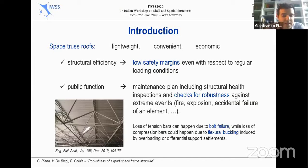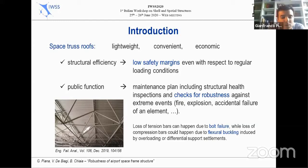Space truss roofs are lightweight, convenient, and economic solutions to cover large areas. Their structural efficiency makes them work with low safety margins, even with respect to regular loading conditions. At the same time, their public function requires a maintenance plan including structural health inspections and checks for robustness against extreme events like fire, explosion, accidental failure of an element, etc. Loss of tension bars can happen due to bolt failure, while loss of compression bars could happen due to flexural buckling induced by overloading or differential support settlements.